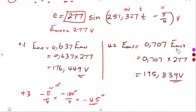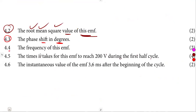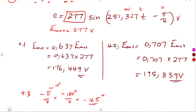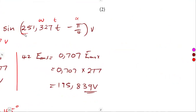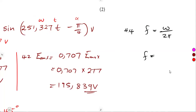That was our 4.3. Working with 4.4, the frequency of this EMF — the frequency is determined from omega. Remember, we have omega there. So the frequency from omega: that's omega over 2 pi. We listed this from our formulas. The value of omega is 251,327 divided by 2 pi, which gives us the frequency.